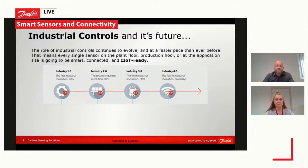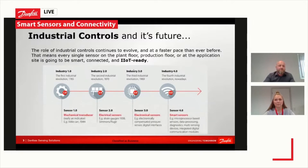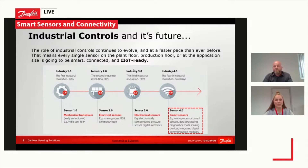we need to understand the industrial revolution, because sensors have been around for many, many decades. They have somehow always been linked — the evolution on the sensor side has been linked to the evolution on the industrial control side as well. The step from Industry 3.0 to 4.0 is where the term 'smart sensor' starts to appear, and this is the key topic on the sensor side for the fourth industrial revolution.